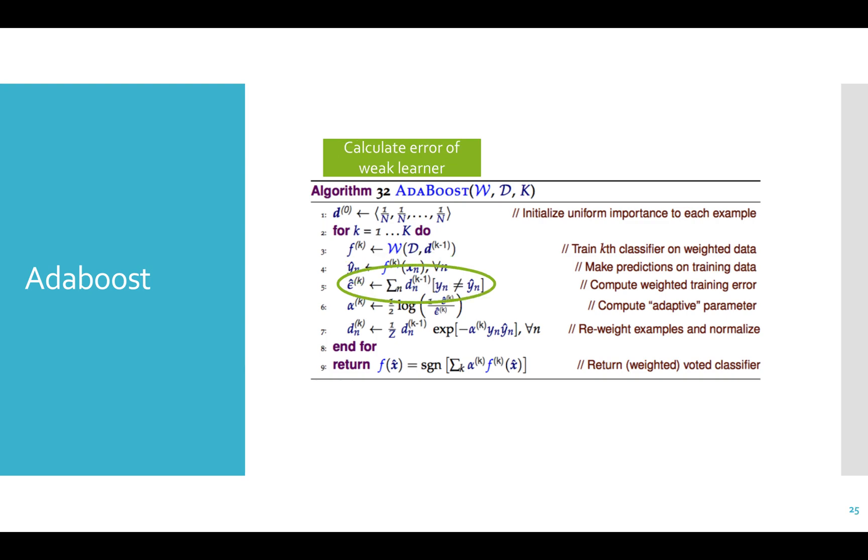Line 5, we calculate the error of the kth weak learner given the weights for each sample. So this is the weighted error using the d to the k minus 1. y n is not equal to y hat n is the indicator function. That's 1 when it's true and 0 otherwise. So the error is simply a weighted count of incorrect predictions.